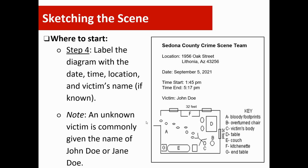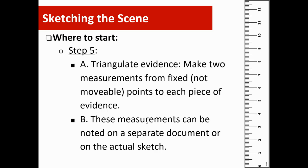Step five, label the diagram with the date, time, location, and victim's name if you know it. An unknown victim is commonly given the name John Doe if male or Jane Doe if female. In the sixth step, you're going to triangulate. That's where you make two measurements from fixed points at the crime scene to that piece of evidence. Investigators typically do this with each piece of evidence. If you have 30 pieces, you can imagine how crowded this might get, so these measurements can be noted on a separate document or on the actual sketch.